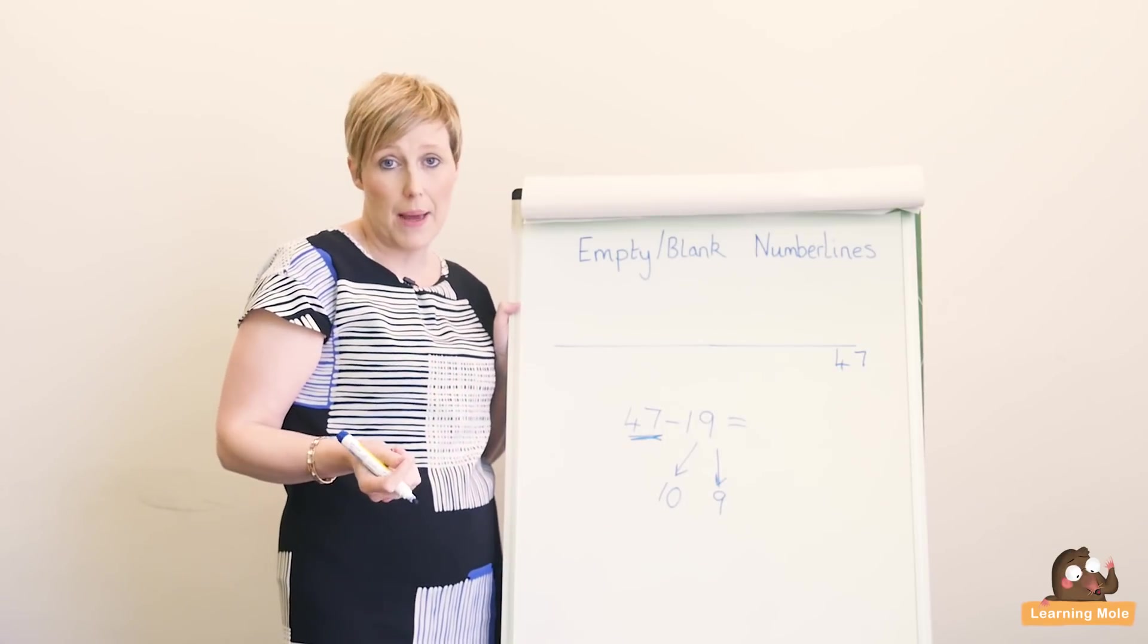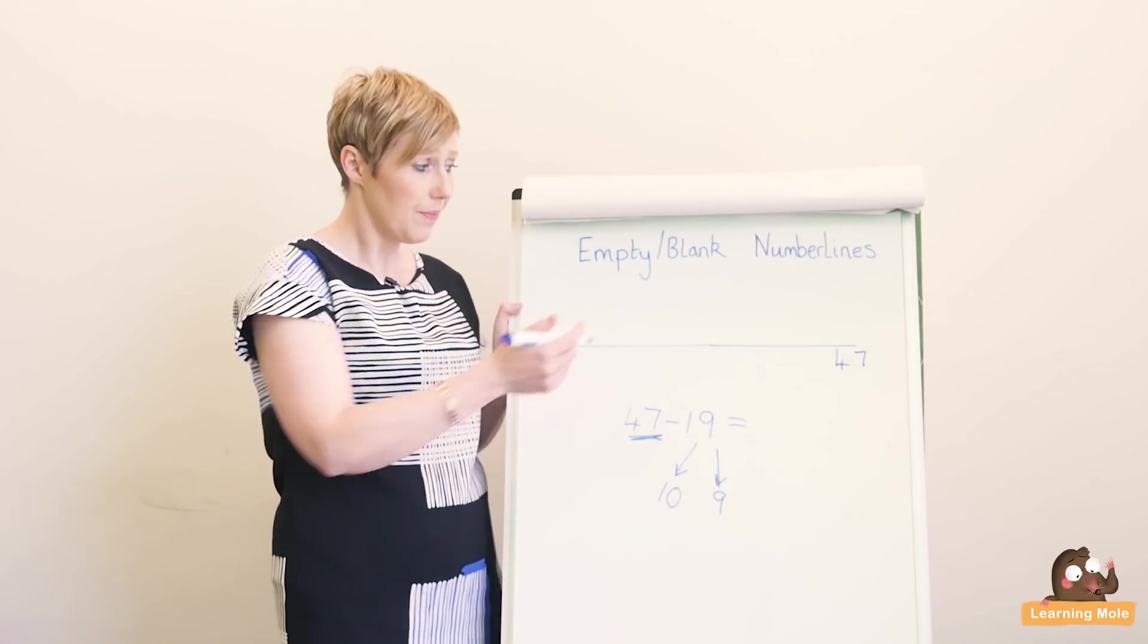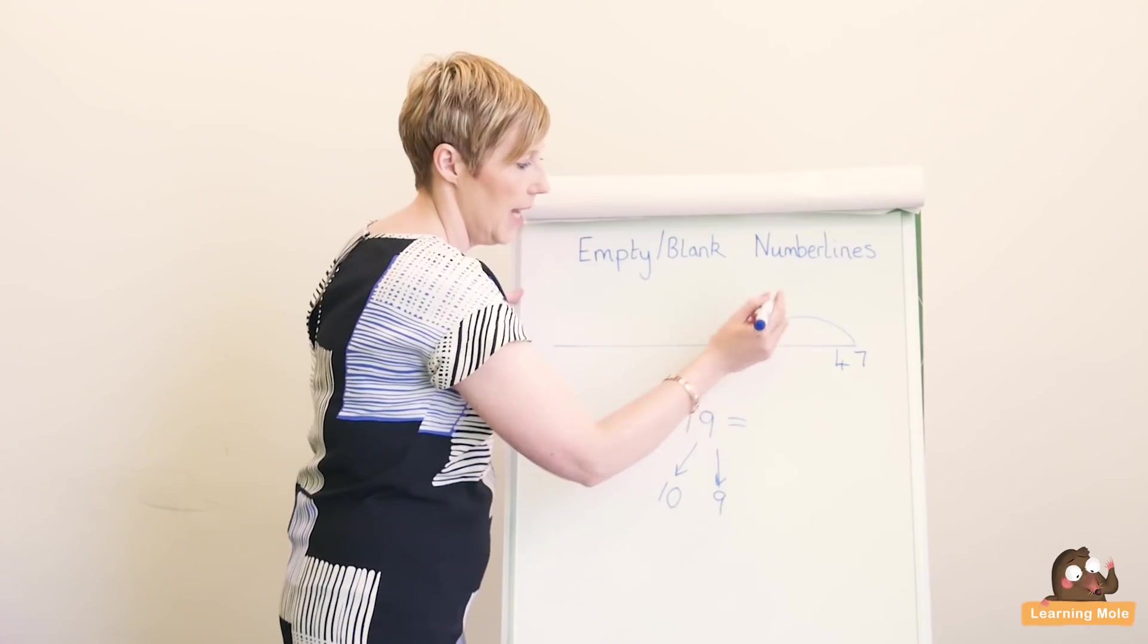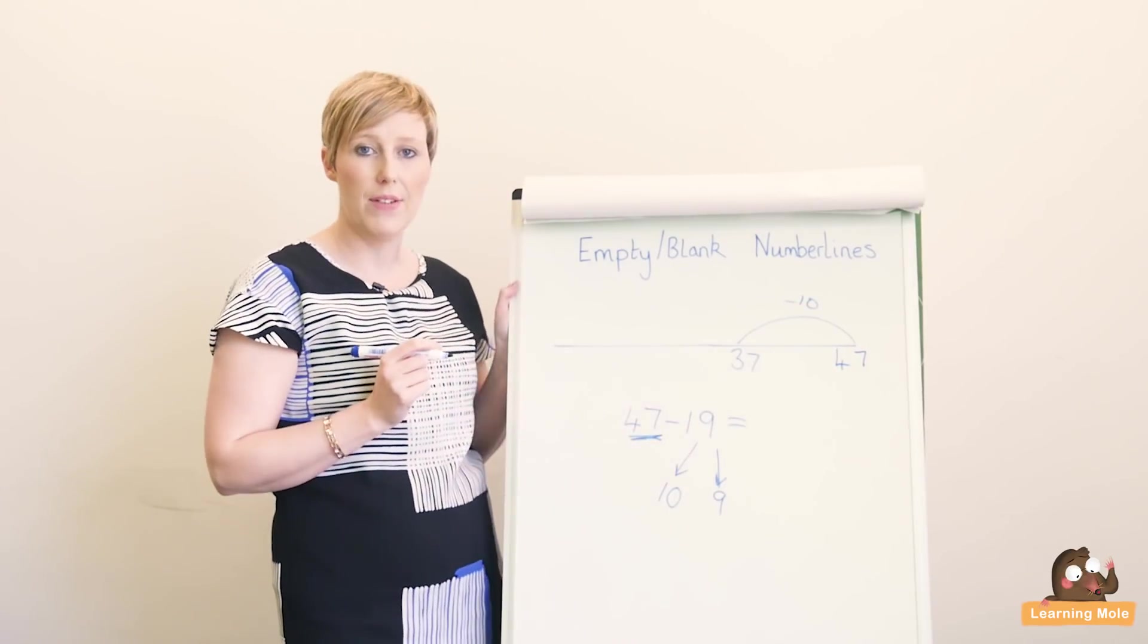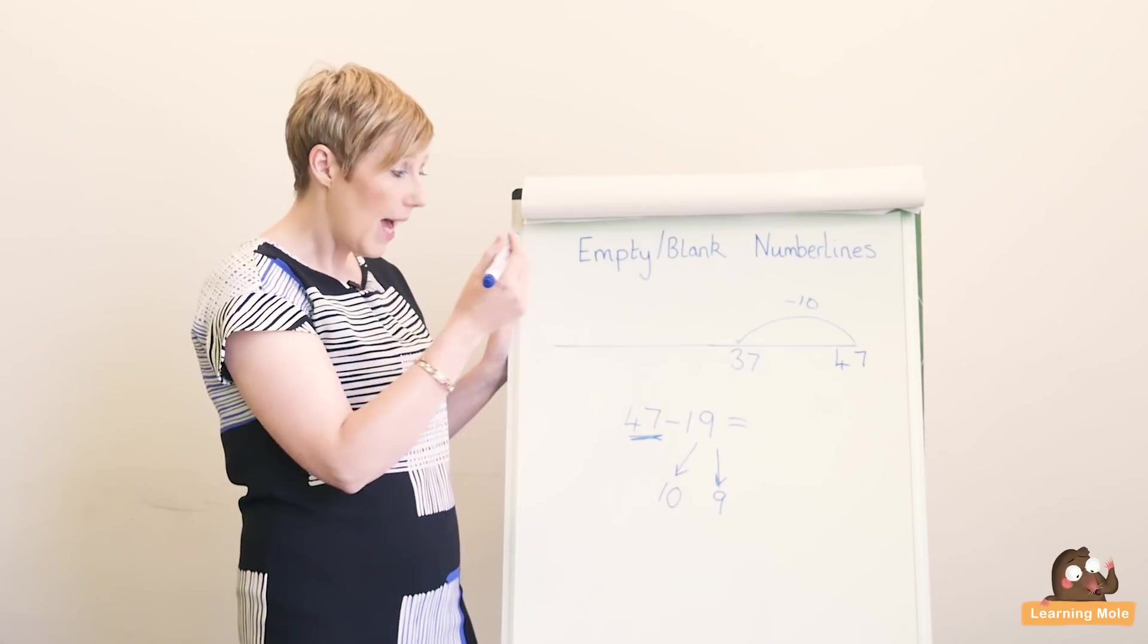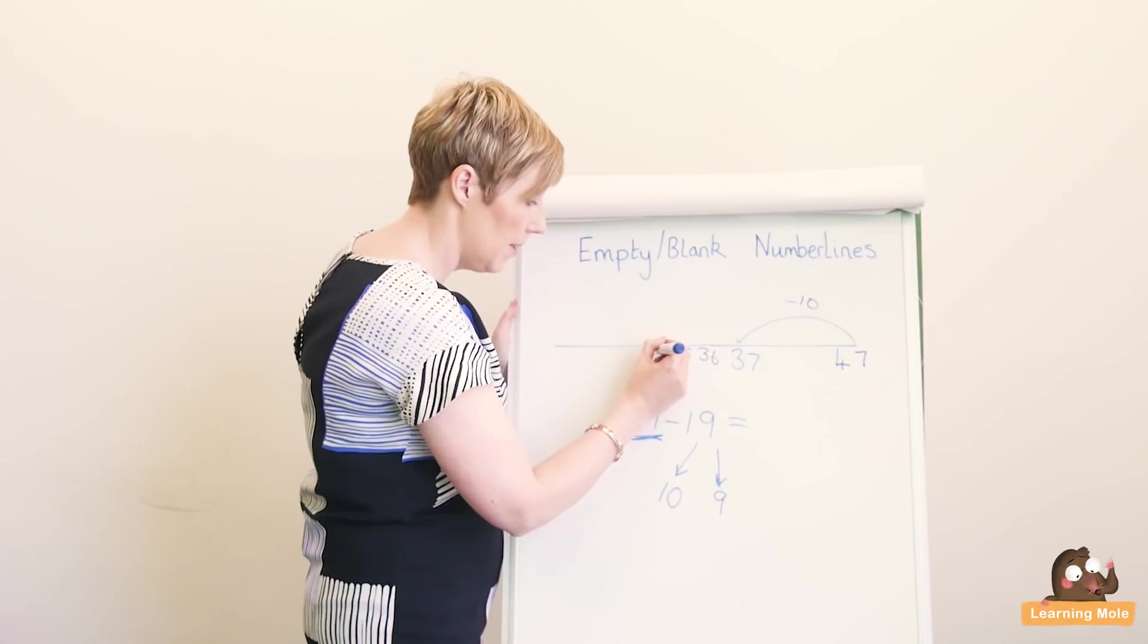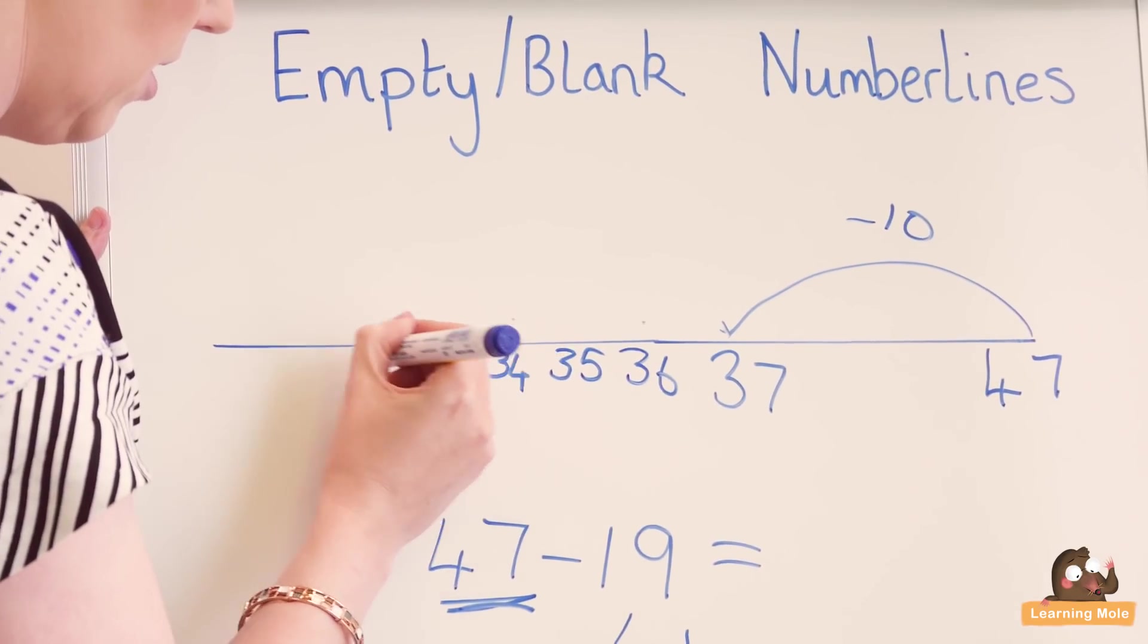We already know that we can count in steps of 10, so could we just take away 10 straight away rather than having to do 10 jumps? Your child will already say yes, I can do that. So we do one big jump of 10, take away 10, and they should be able to tell you that's 37. Then they can take away their nine jumps. Again, if you want to prepare your number line before or you can do the numbers after, it's not a problem. I think it's sometimes easier just to do your numbers as you go along.